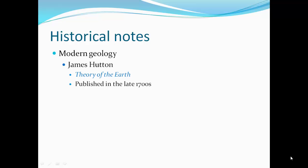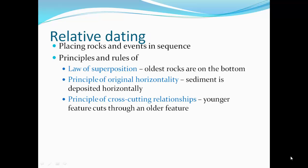James Hutton wrote The Theory of the Earth, published in the late 1700s, and he made the groundwork for uniformitarianism. Now, relative dating — this is how we can figure out how old one rock is versus another rock.